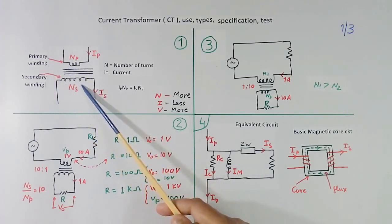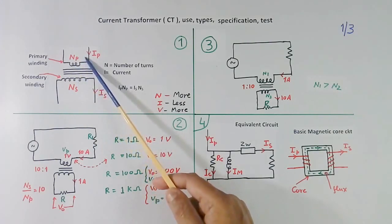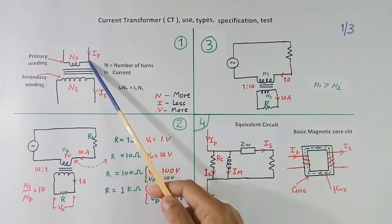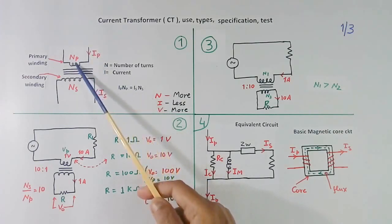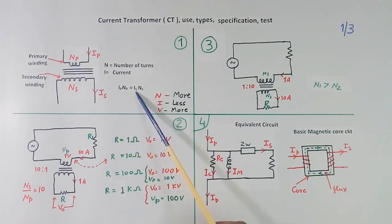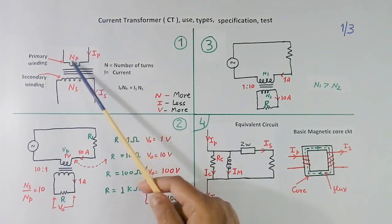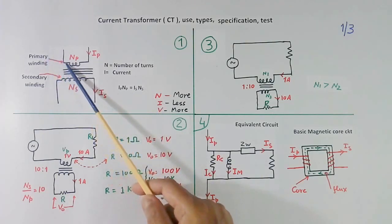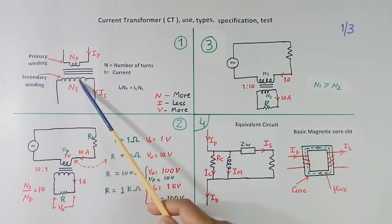But this is not the rule that primary current should be more or secondary should be less. It can be reverse also. I have used that. I will tell later. Now IP is primary current, NP is primary turns, IS is secondary current, NS is secondary turns. So ampere turns of primary IP NP equal to ampere turns of secondary. This is primary winding, this is secondary winding, this is core.